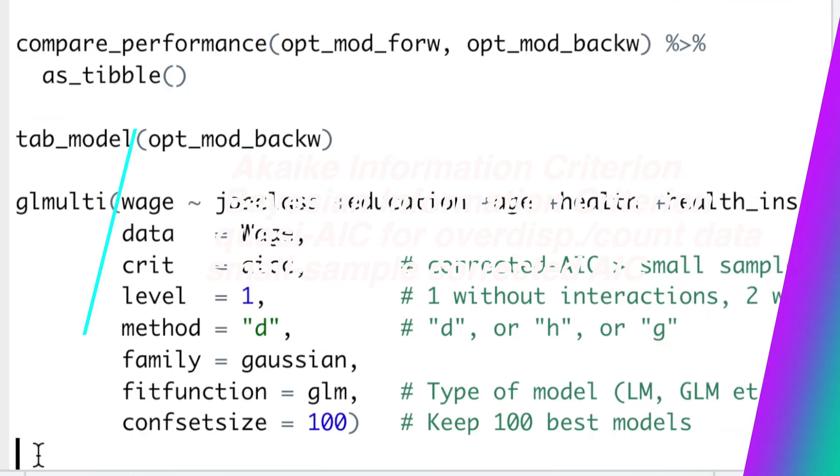which I personally prefer because for big samples, it always gets the same result as AIC information criteria, while with small samples, it performs better.